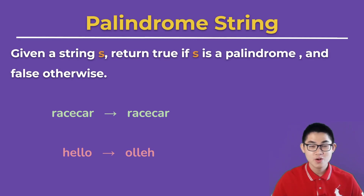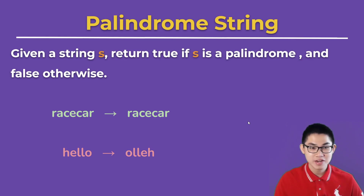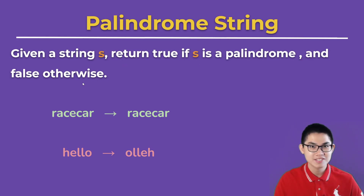In this video, we're going to write a Python program to determine if a string is a palindrome or not. So given a string s, return true if s is a palindrome and false otherwise.